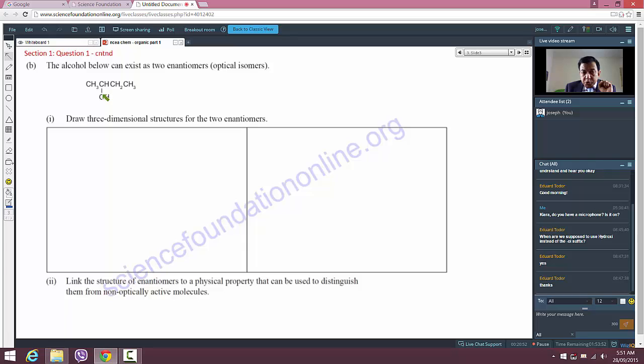This carbon atom that I'm pointing to has four different substituents or groups attached to it. I'm sure you would have played with molecular models in school involving this type of situation. If you take such a molecule where you have a carbon atom connected to four different groups and you assemble that molecule, and then you assemble its mirror reflection...